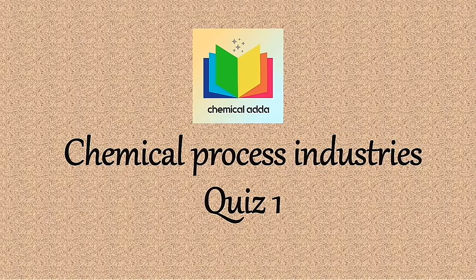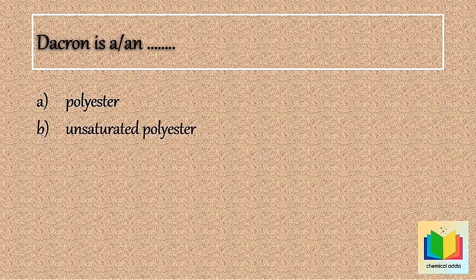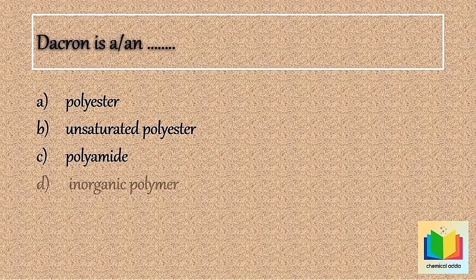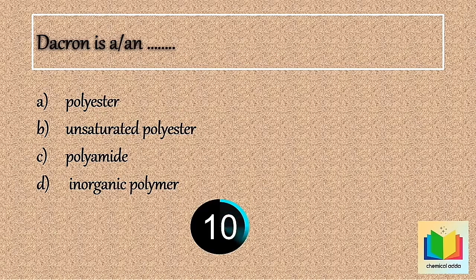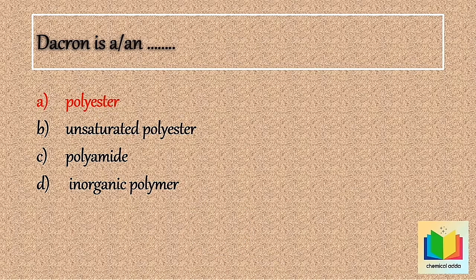First question: Dacron is a or an — ? Option A: Polyester. Option B: Unsaturated polyester. Option C: Polyamide. Option D: Inorganic polymer. [10 seconds] So the answer is Option A: Polyester.